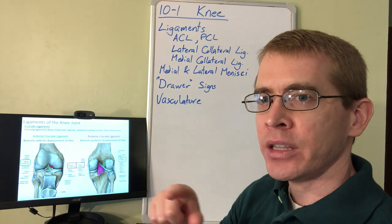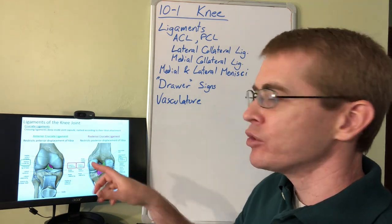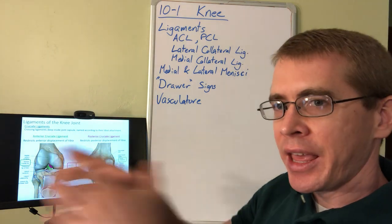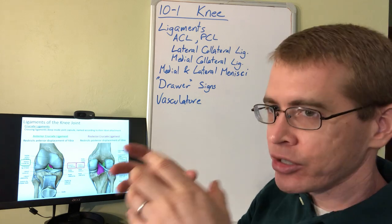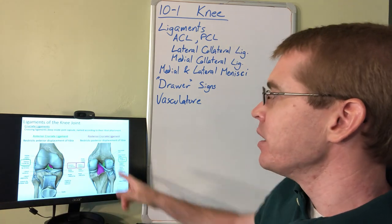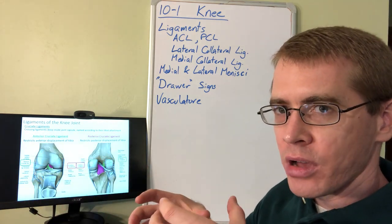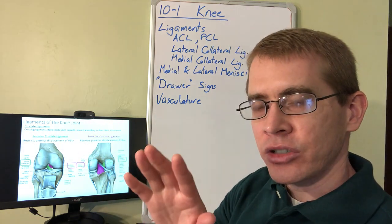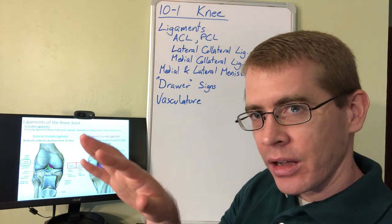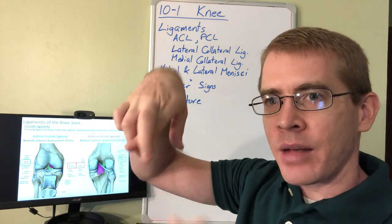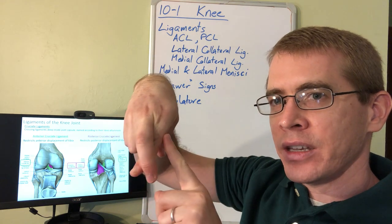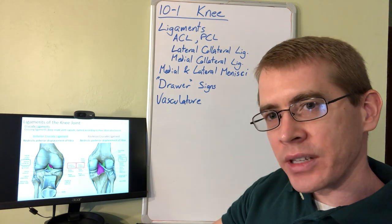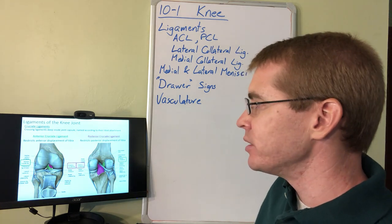There are two cruciate ligaments: the anterior cruciate ligament (ACL) and the posterior cruciate ligament (PCL). These restrict anterior-posterior movement of the tibia on the femur. The ACL restricts anterior displacement of the tibia under the femur, as if the femur were moving away. The PCL restricts movement in the posterior direction. To remember their orientation for the right knee, take your right hand and cross your middle finger over your index finger — this approximates the ACL and PCL. You can place that over your knee to visualize how those cruciate ligaments are oriented.